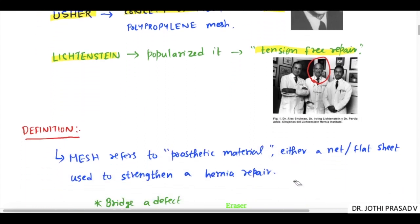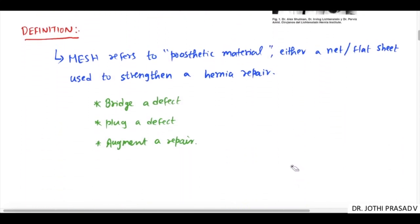Coming to the definition, mesh refers to a prosthetic material that can be either a net or a flat sheet used to strengthen hernia repair. It is used to bridge a defect fixed over it as a tension-free patch, plug a defect where the mesh is pushed into it, or augment a repair where the defect is closed with sutures and mesh is added for reinforcement.